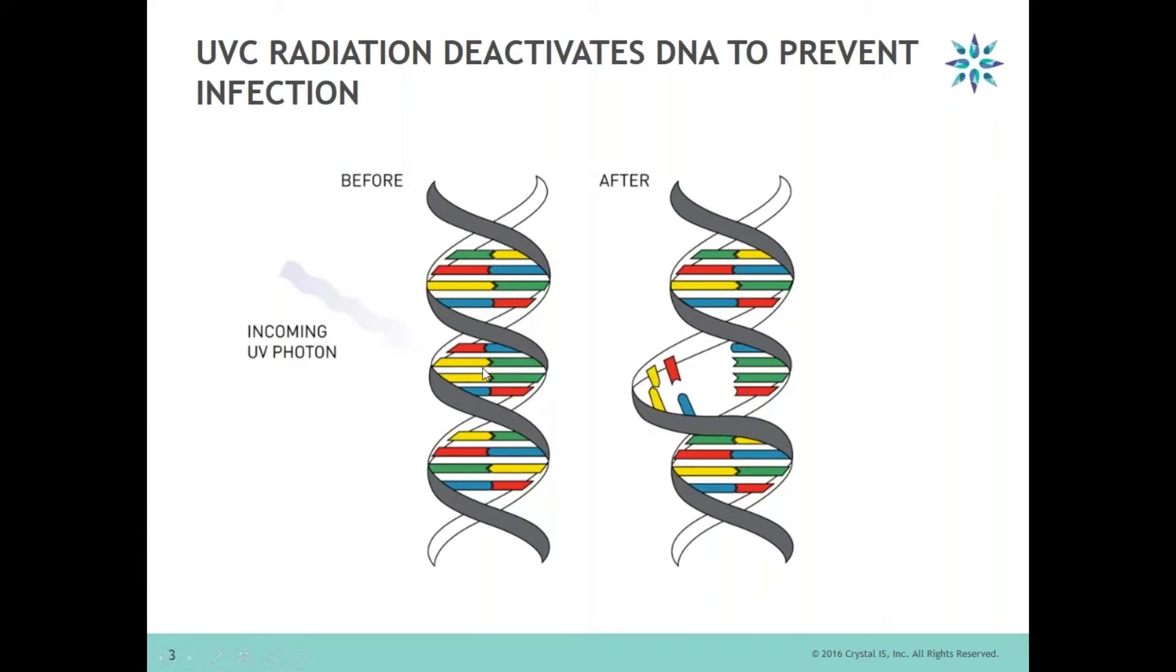It attacks the DNA of the microbe and after, based on the dosage it requires, it actually cleaves the DNA. And the process of this cleavage of DNA and formation of the dimer for the thymine molecule basically prevents the replication process for the microbe.